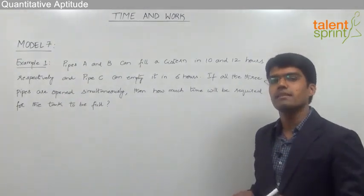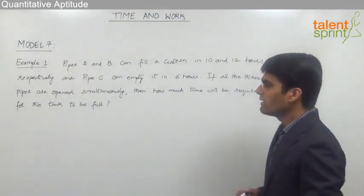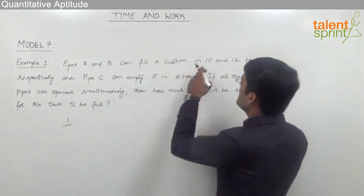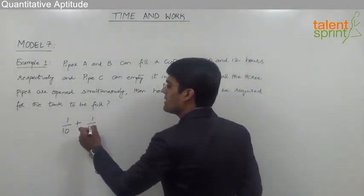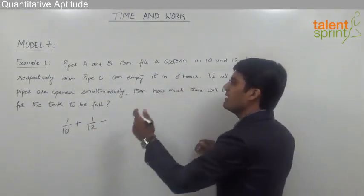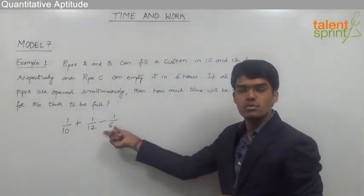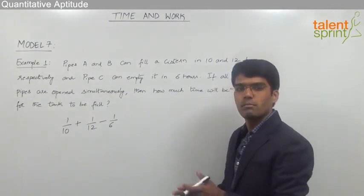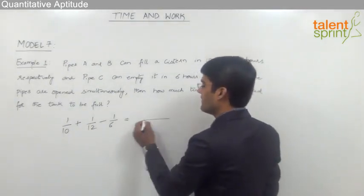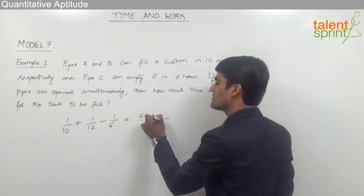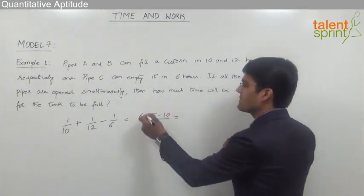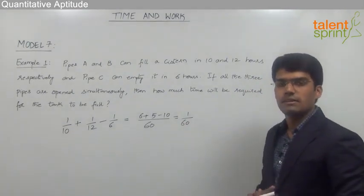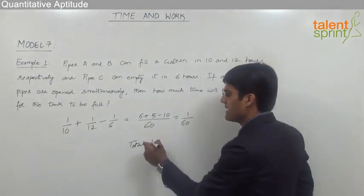Since pipe C empties the tank, it does negative work. Going by the unitary method, work done by all three pipes together in 1 hour = 1/10 + 1/12 − 1/6. Taking LCM as 60: 60/10 = 6, 60/12 = 5, 60/6 = 10. So 6 + 5 − 10 = 1. Total work per hour = 1/60. Therefore the total time required is the reciprocal, which is 60 hours.